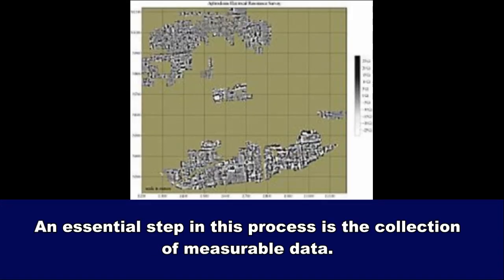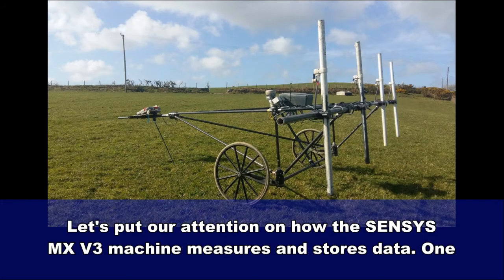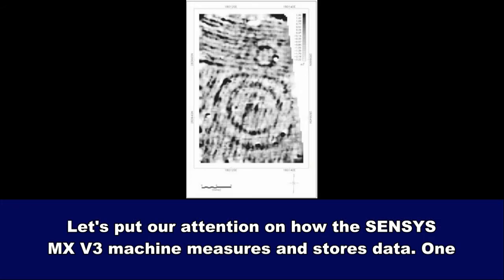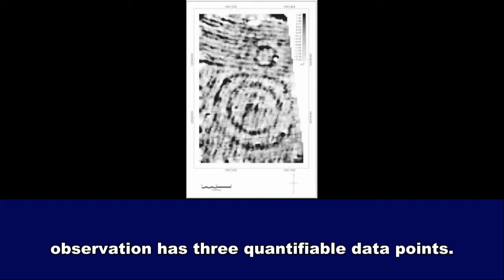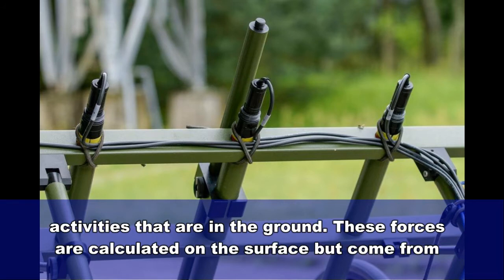An essential step in this process is the collection of measurable data. Let's put our attention on how the SENSI MXV3 machine measures and stores data. One observation has three quantifiable data points. The first data point is the magnetic forces from materials that connect to ancient human activities that are in the ground.